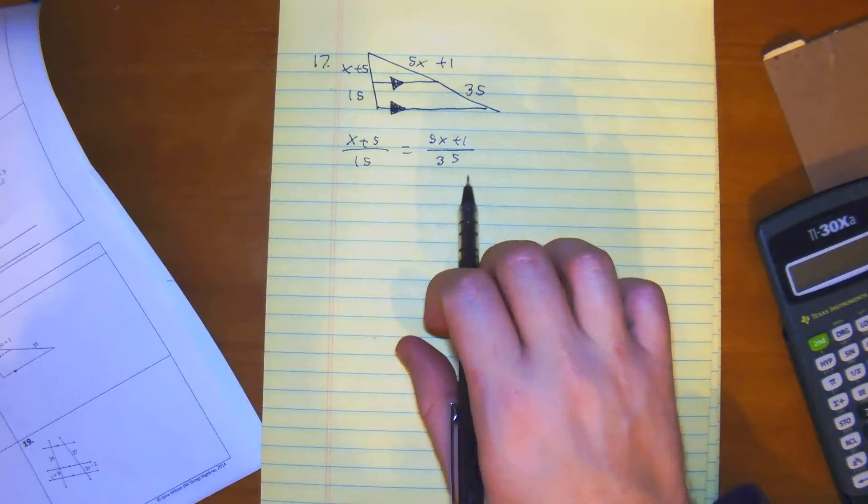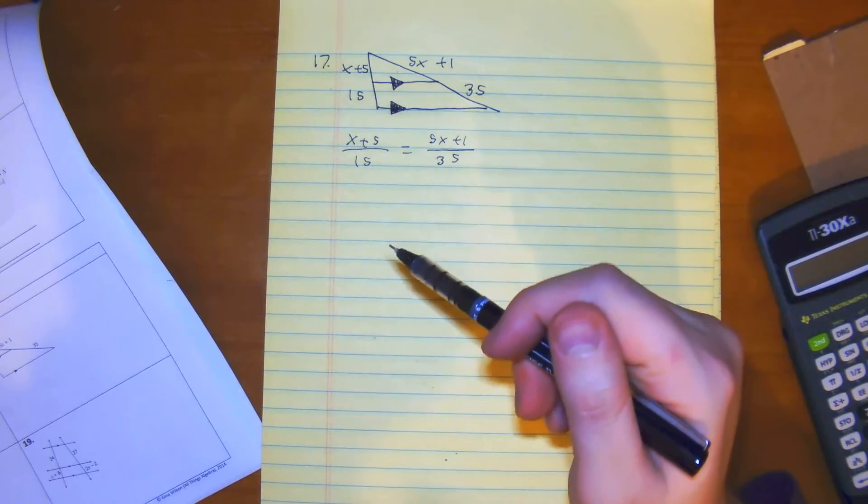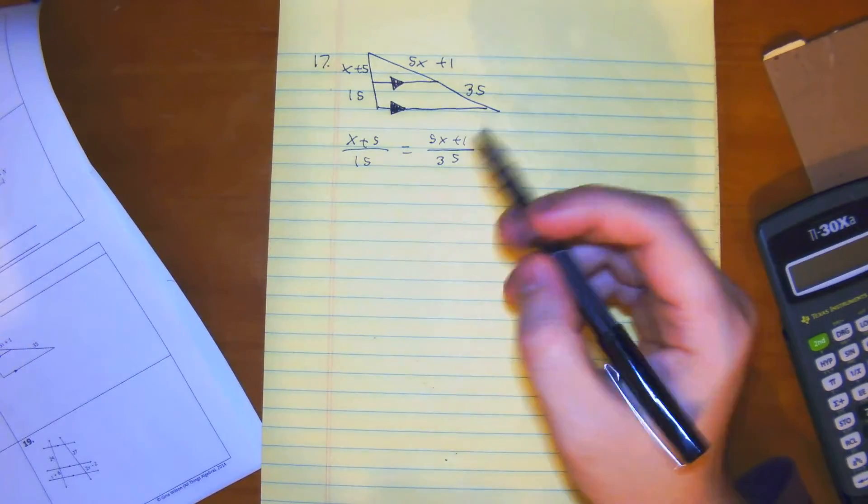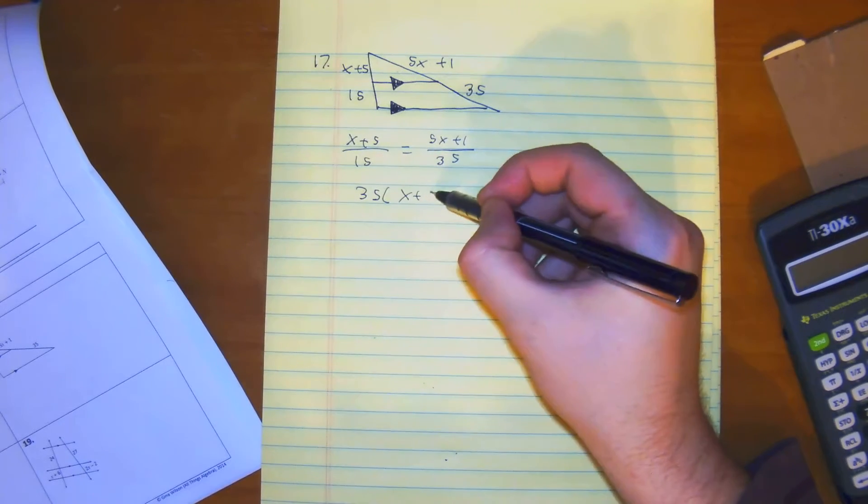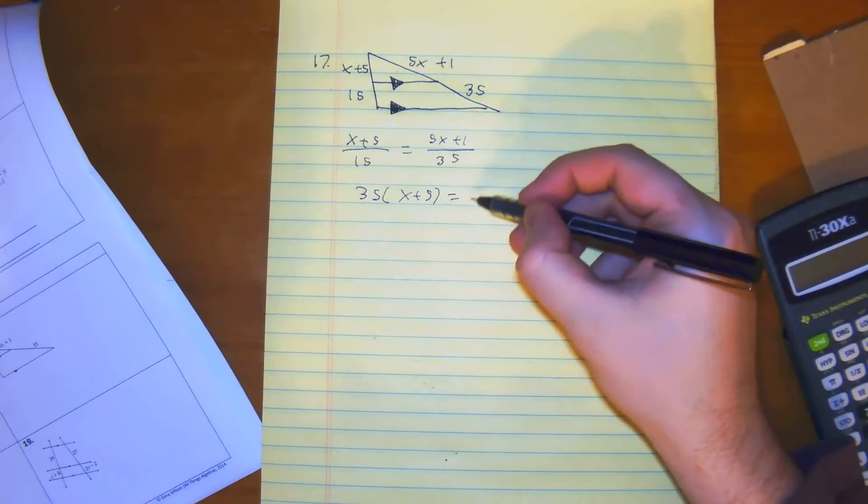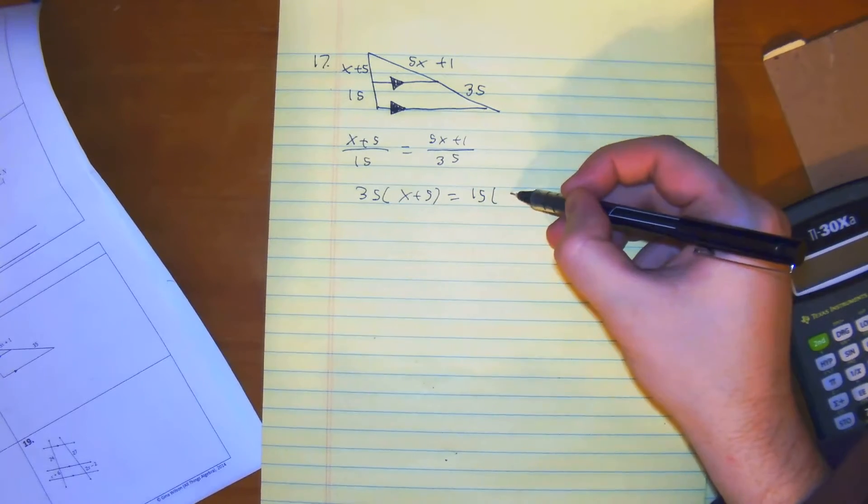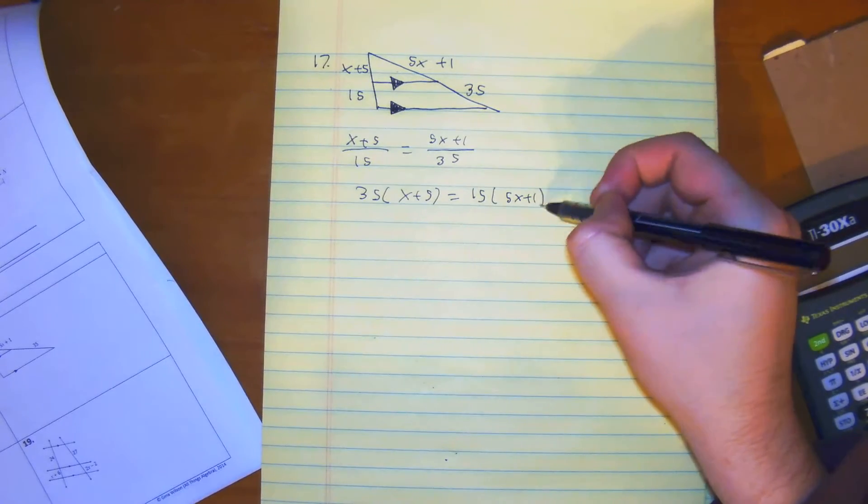From here, we don't have anything we can simplify, so what we're going to do is cross-multiply. We have 35 times the quantity of x plus 5 is equal to 15 times 5x plus 1.